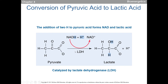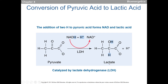The lactate dehydrogenase reaction goes in this direction in muscles during hard exercise. Once lactate is in the bloodstream it can go to heart tissue, and the reaction can reverse. Lactate dehydrogenase has four subunits — a skeletal muscle type and a heart type. The heart type makes the reaction more likely to go from lactate to pyruvate, while the skeletal muscle type makes it more likely to go from pyruvate to lactate.